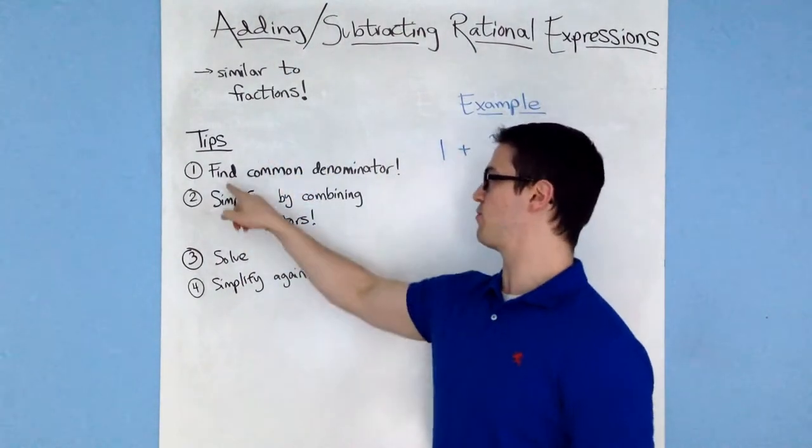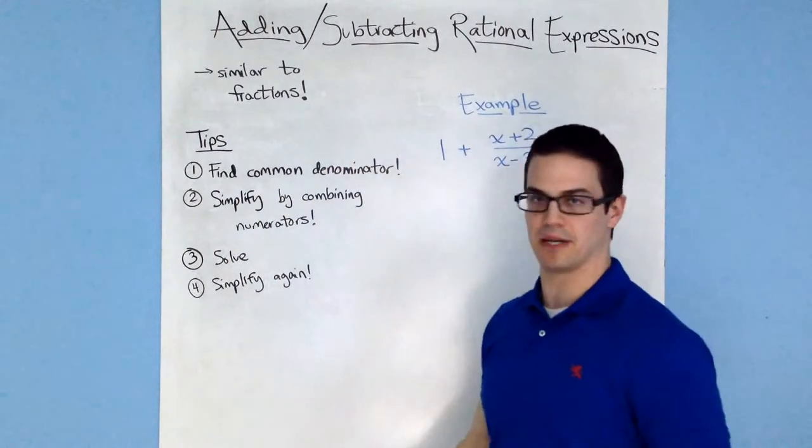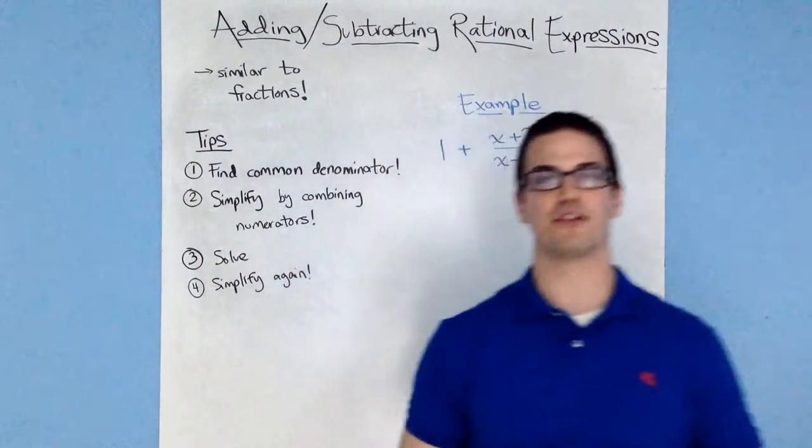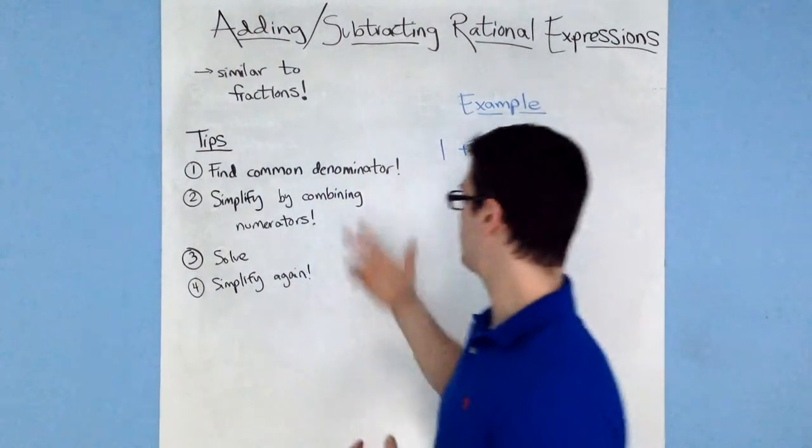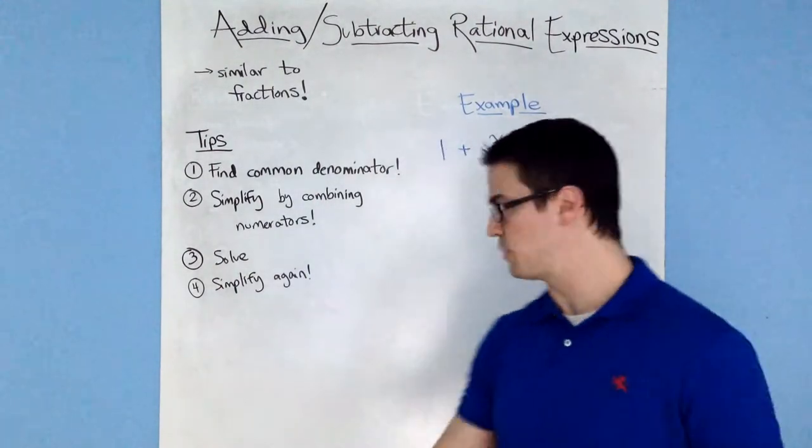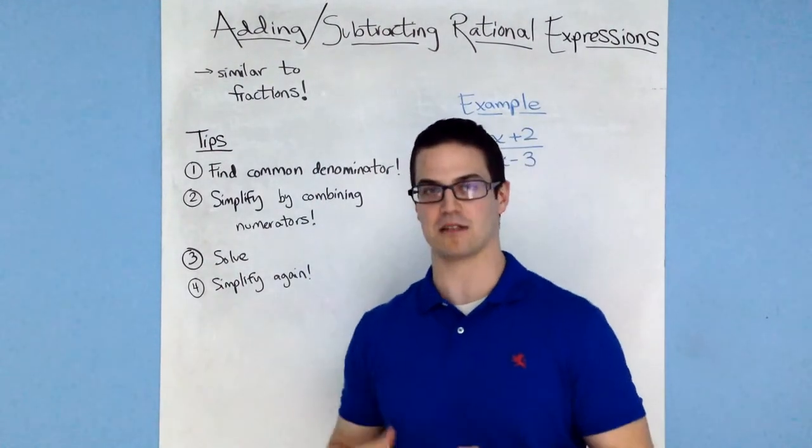Here's some tips. First, find a common denominator between the two numbers you're adding together. Next, simplify by combining the numerators. Once you have common denominators for both of them, you can combine the numerators. Then solve, and last but not least, you can simplify again if necessary.